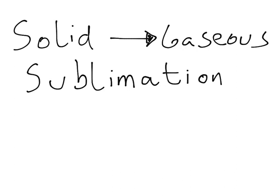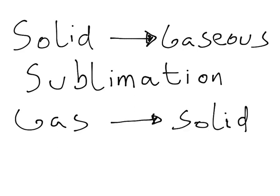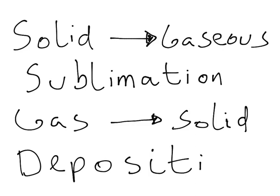The opposite of sublimation is when a gas goes directly to the solid state, and this process is called deposition. Deposition is not widely seen and not a very familiar term, but an example is iodine — the gas particles go directly to the solid state, from being a gas to being a solid object. That is how iodine works.